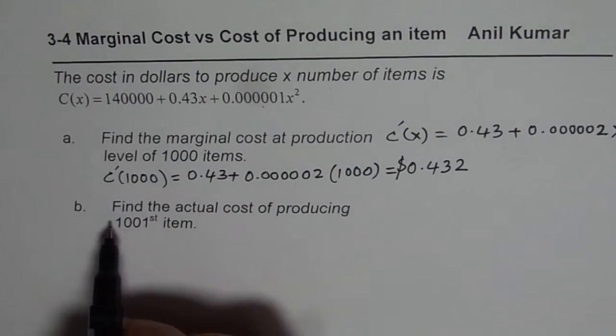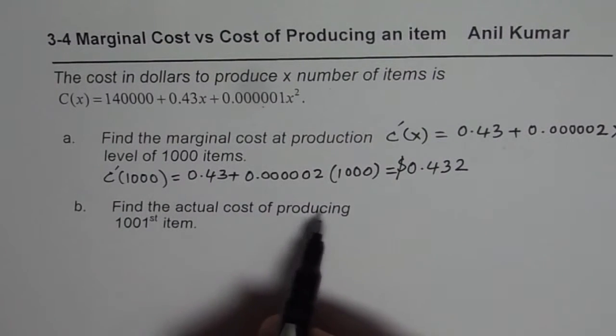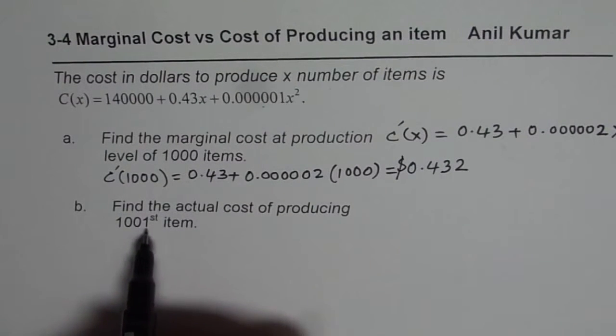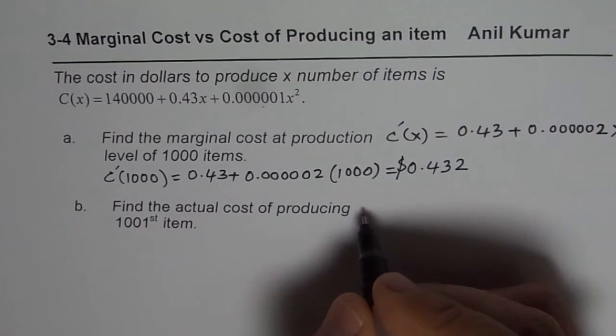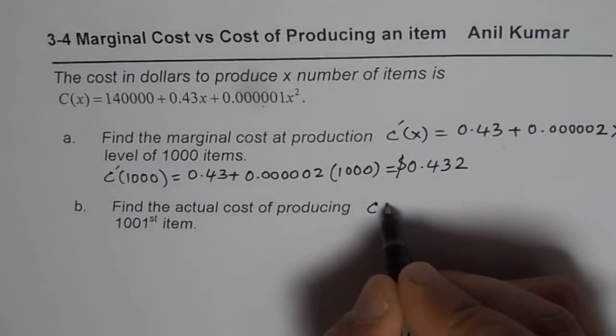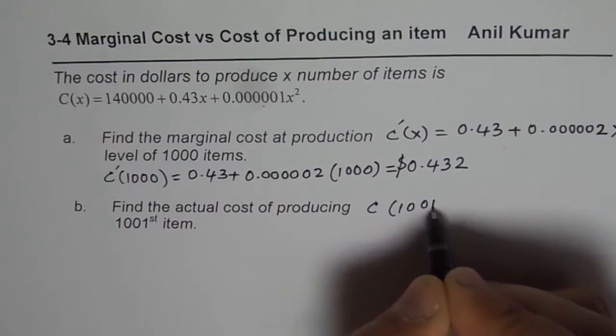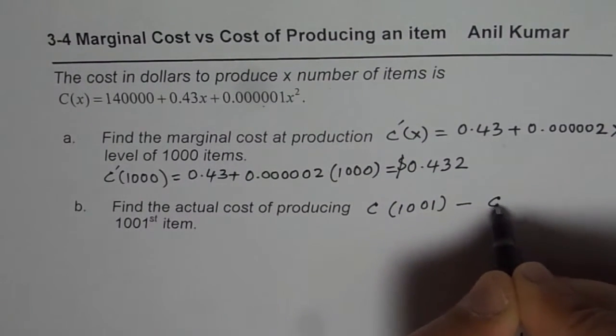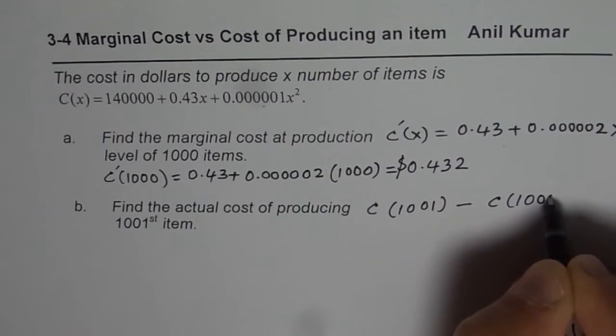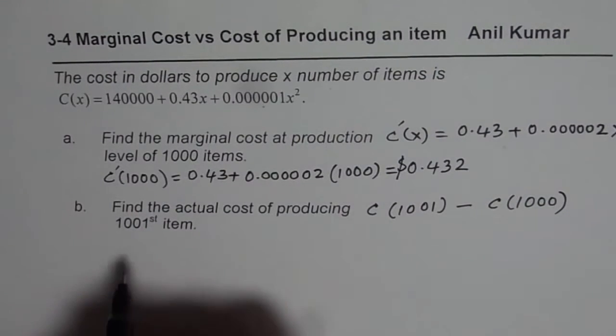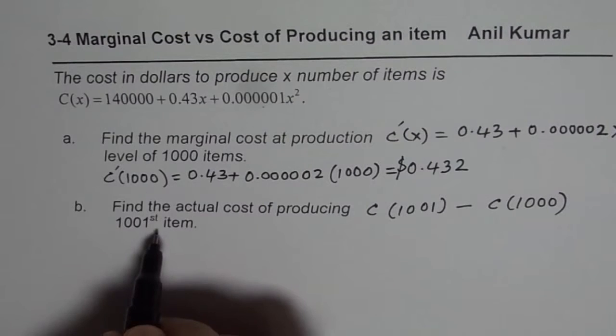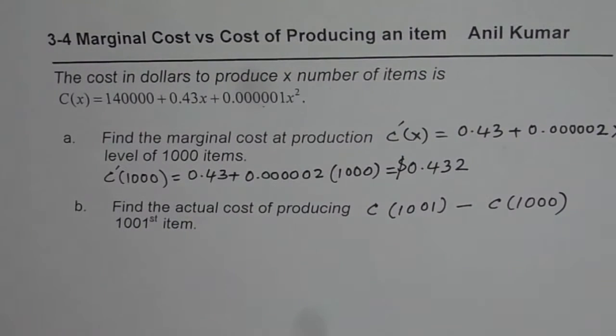Now, the part B is, find the actual cost of producing 1001st item. Now cost of producing 1001st item should be cost of producing 1001 items minus cost of producing 1000 items. So that will give us the cost of producing that particular item, which is 1 more than 1000.